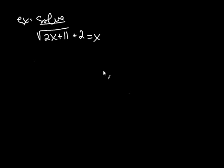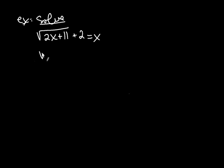Let's go ahead and solve the square root of 2x plus 11, plus 2, equals x. The first thing you do — and this is always true when you solve an equation involving a radical — is you isolate the radical, meaning you get it by itself. So we subtract 2 from both sides and get the square root of 2x plus 11 equals x minus 2. Now we're going to square both sides to get rid of this radical.